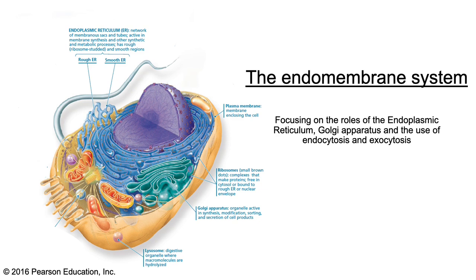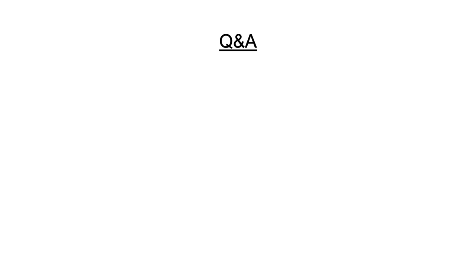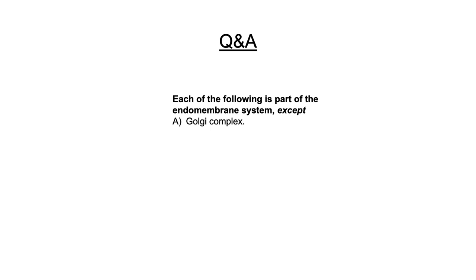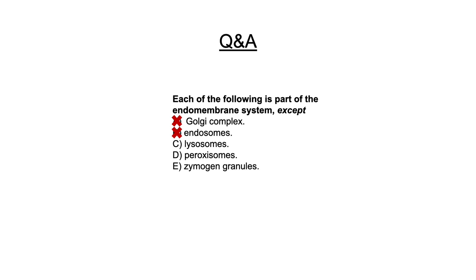This brings us to the first quiz question: each of the following is part of the endomembrane system except — possible answers are the Golgi complex, endosomes, lysosomes, peroxisomes, and zymogen granules. We already know that the Golgi complex, endosomes, lysosomes, and zymogen granules are all part of the endomembrane system, leaving peroxisomes as the only part which is not. This answer can actually be found within the introduction to the chapter.